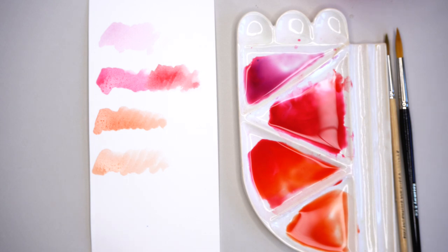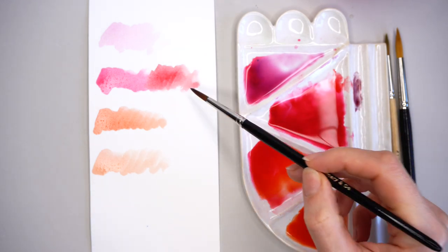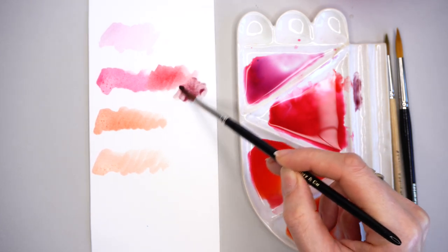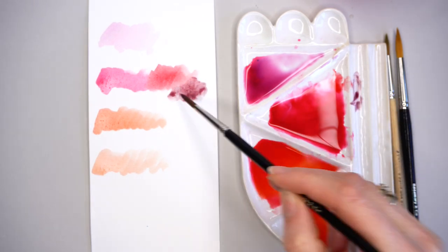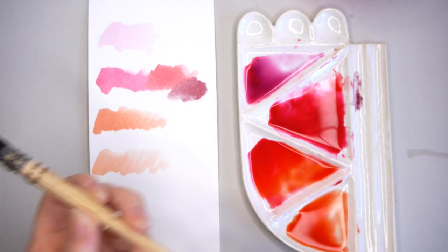It is warm red pigment and manganese violet, a little touch of manganese violet to see the darker mix of these colors. Everything we need to prepare and test before we start painting.